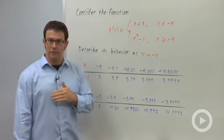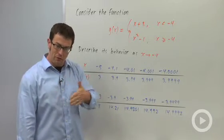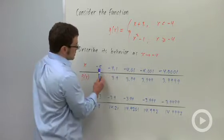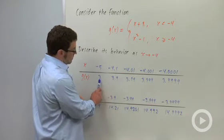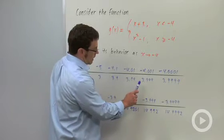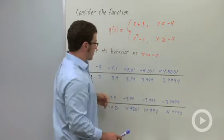Negative 5 is to the left of negative 4 on the number line. So we're starting from the left and moving to the right. Negative 5, negative 4.1, negative 4.01. Look what happens to the values. We get 3, 3.9, 3.99. These values are getting closer and closer to 4.